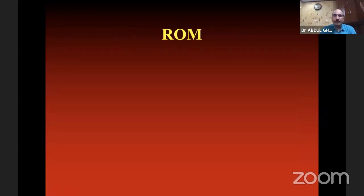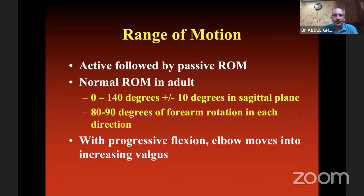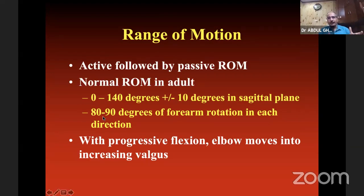Step three is movement — range of motion. Always start with active range of motion, starting with the normal limb first, then followed by passive. Normal range of motion: flexion-extension is 0 to 140 degrees plus or minus 10 degrees, and 80 to 90 degrees of forearm rotation — supination or pronation. With progressive flexion, the elbow tends to move into the valgus position.